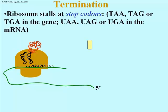Ribosomes move along the message in the 5' to 3' direction, successively going through cycles of elongation and translating the codons in the messenger RNA into a growing polypeptide, shown here as a red squiggle at the top of a transfer RNA.